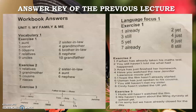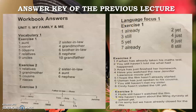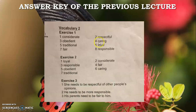Answer key of your previous lecture: Unit One - My Family and Me. Vocabulary One: Exercise One, Exercise Two, Exercise Three. Language Focus One: Exercise One, Exercise Two, and Exercise Three. Vocabulary Two: Exercise One, Exercise Two, and Exercise Three.